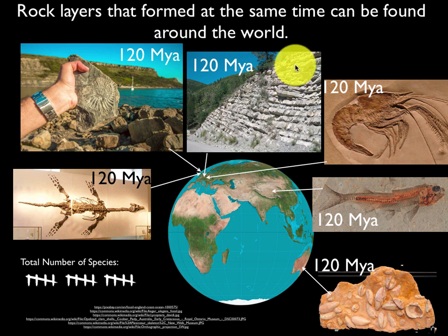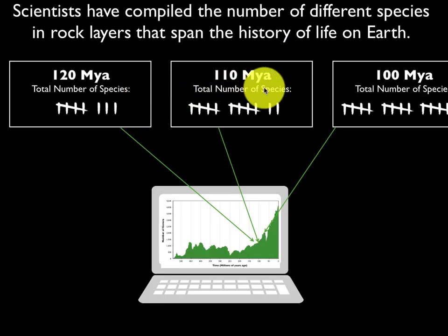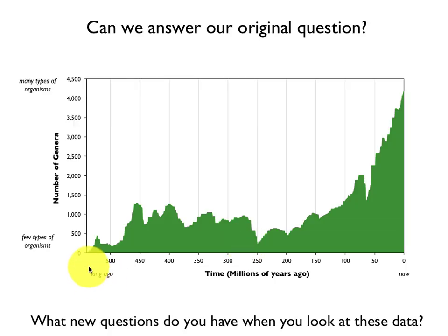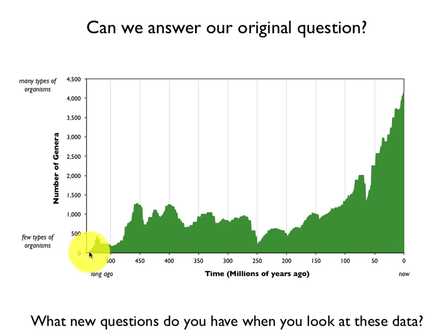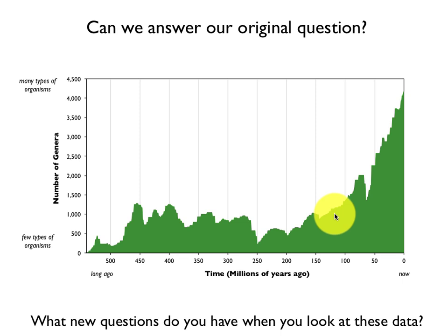We can start tallying up the number of species and putting them on a graph. Scientists have done this for all the rock layers spanning the history of life on Earth, and they get a graph like this. On the horizontal axis we have time in millions of years ago, from a very long time ago all the way up to today on the right side. The vertical axis tells us about the number of types of genera — a more general category than species — the types of organisms. We start from only a little variety at the beginning, all the way up to many different types. And you can see things go up and down. What does it mean for the number of types of organisms to go down? That means those species no longer exist on Earth — they went extinct.